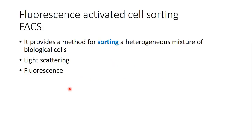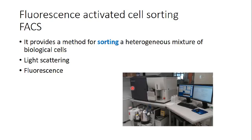FACS mechanism is not only a cell-counting mechanism but also a cell-sorting mechanism. It provides a method to sort a heterogeneous mixture of biological cells. It depends on light scattering — forward scattering light and side scattering light — as we saw in flow cytometry, but it also depends on fluorescence and can detect fluorescence. The FACS machine has a computer to analyze data, a fluids container, and a waste container.